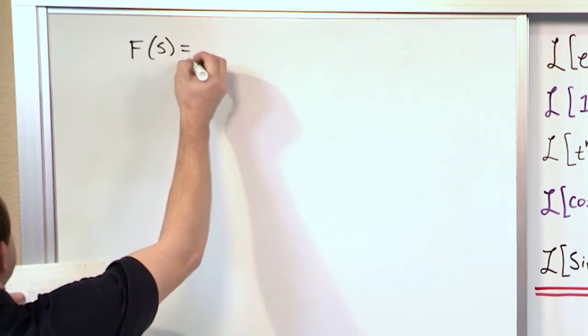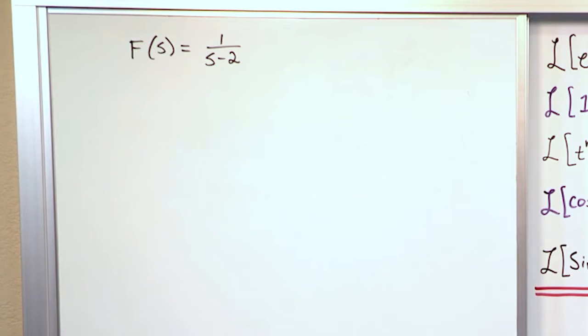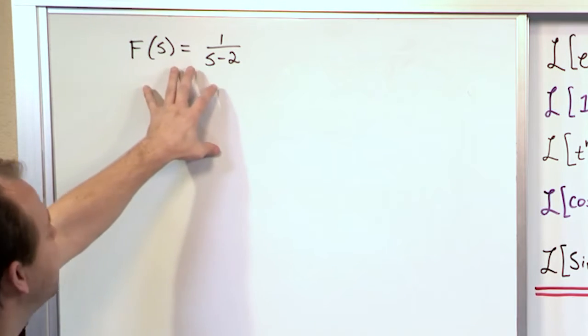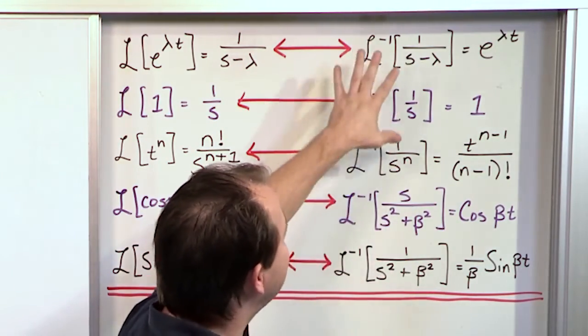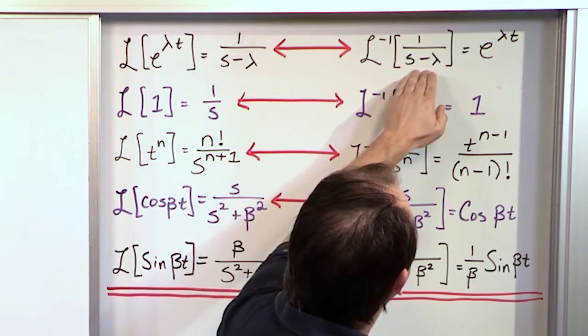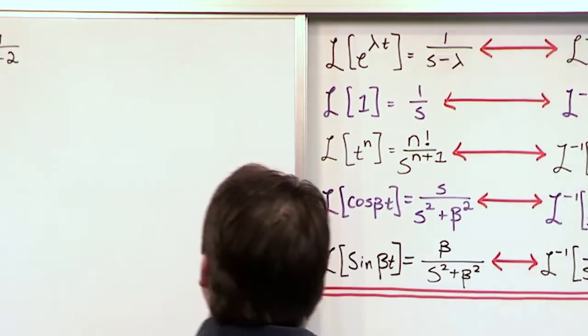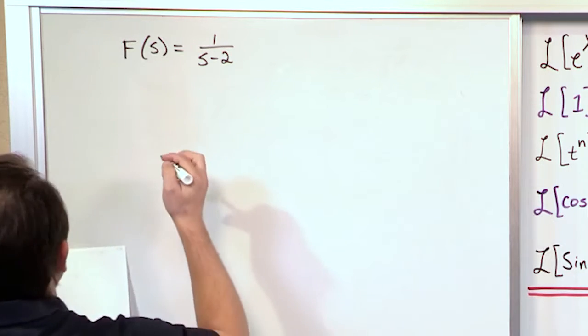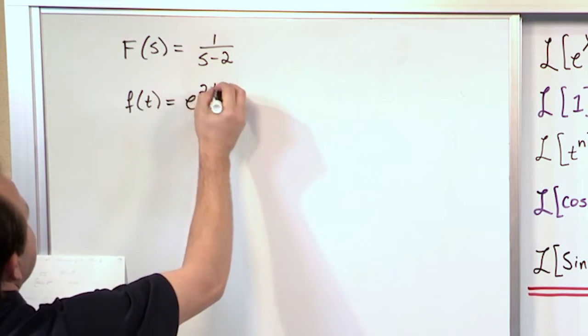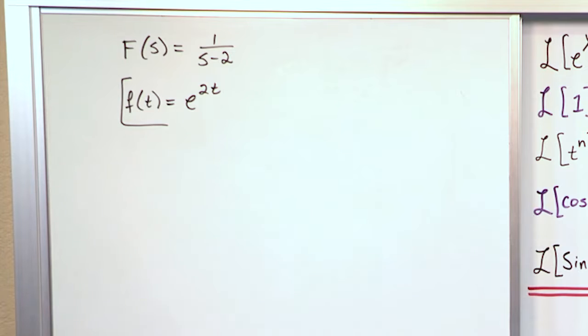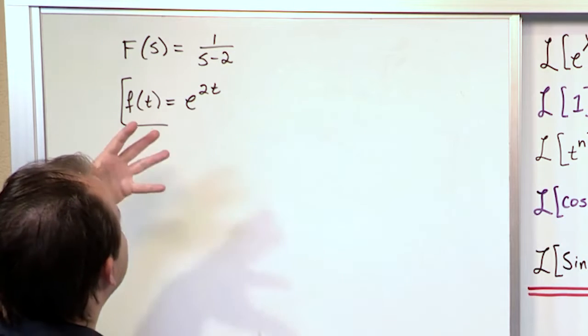If you're given a function of s that's 1 over s minus 2, you want to transform this back to the time domain. So what you need to do first of all is take this function of s and go look over here at what we've already created and see if there's something that matches the general form of what we have. And of course you can see that this function here 1 over s minus lambda fits the bill. Whatever is over here in this spot just goes into the exponential there. So without really doing any work at all, you can just write down the f of t that corresponds to this is e to the 2t. The hardest part of inverting a transform is just making sure to not do anything stupid or have any oversight or any careless errors.